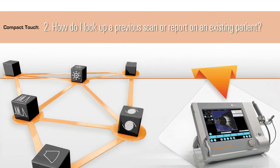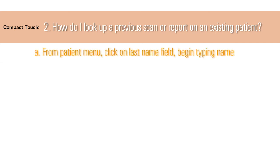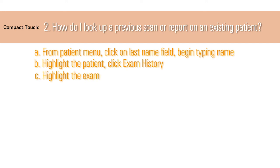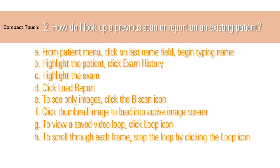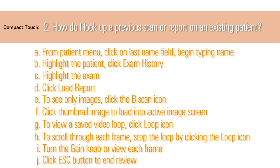2. How do I look up a previous scan or report on an existing patient? From the Patient menu, click on the Last Name field. Begin typing the last name. A list of patients whose last names begin with the first letter will populate. Highlight the patient you are looking for and click the Exam History icon at the bottom of the screen. A list of all exams for this patient will populate. Highlight the exam you wish to review. Click on the Load Report icon. If you wish to see only the images, not in report form, click on the B-scan icon at the bottom of the page. Click on the thumbnail of the image you want to see. This will load the image into the active image screen. If it is a saved video loop, click the Loop icon left side of the screen. This will activate the video. To scroll through the loop frame by frame, stop the video by clicking the Loop icon again, then turn the Gain knob on the machine. To end your review, click the Escape ESC button.